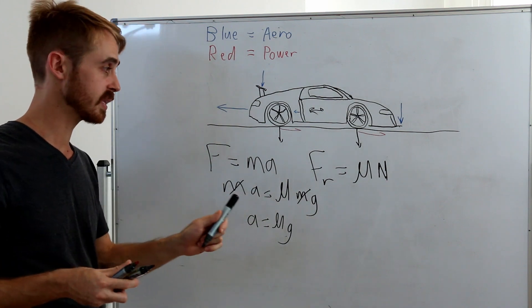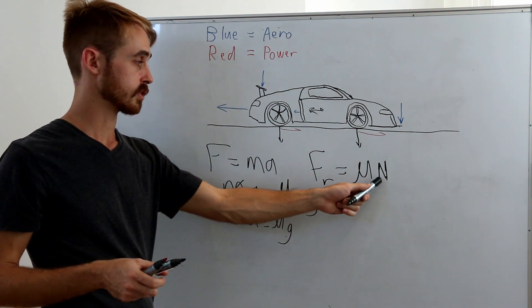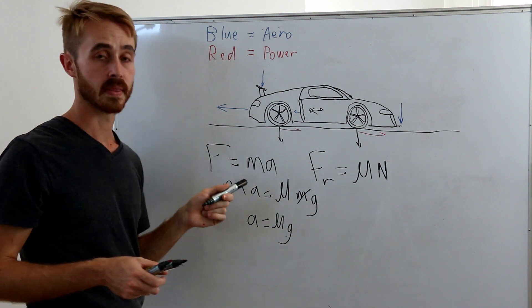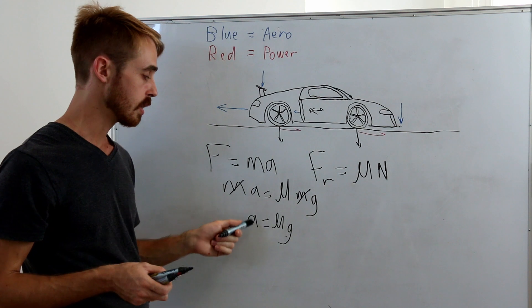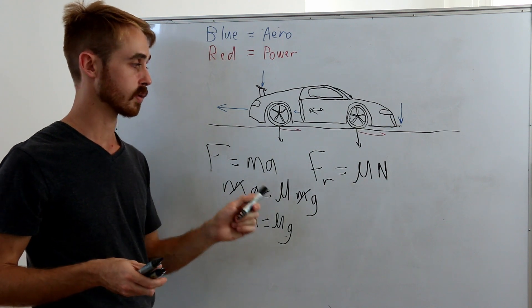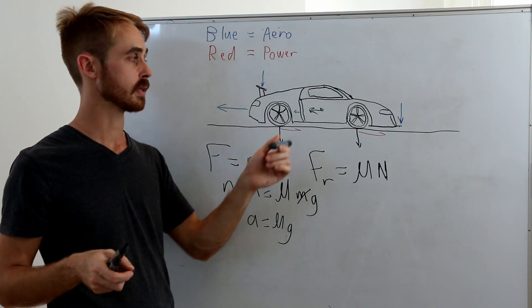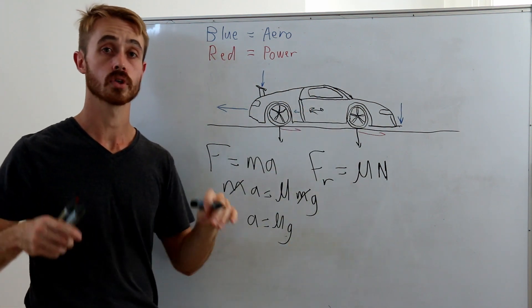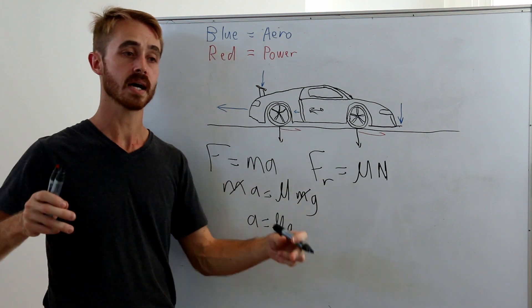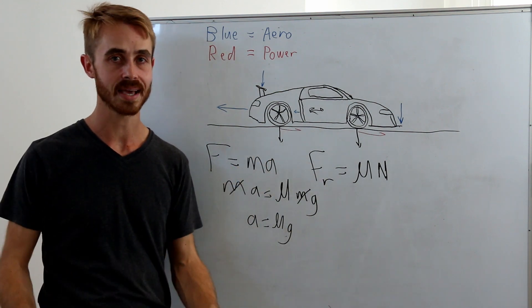As we increase the speed, we'll end up with this normal force increasing faster than this side of the equation, because obviously the mass of the car is not increasing. You'll end up with the acceleration actually being dependent on the mass of the car as you go faster if you have downforce. So if you have downforce, you'll accelerate faster if your car is lighter.